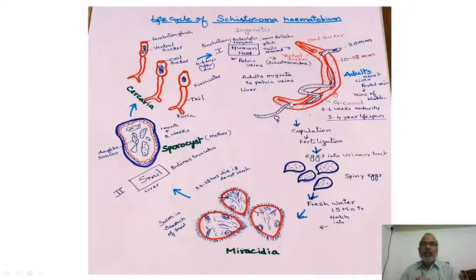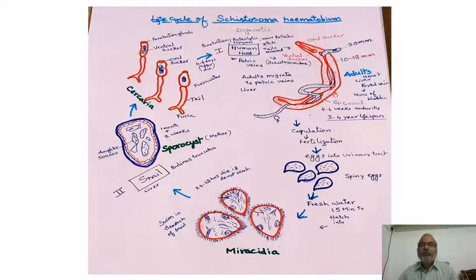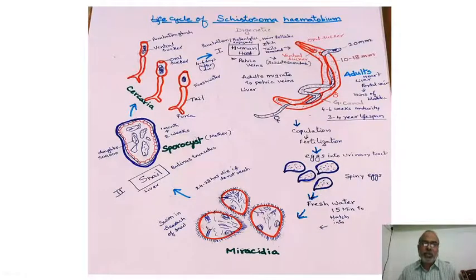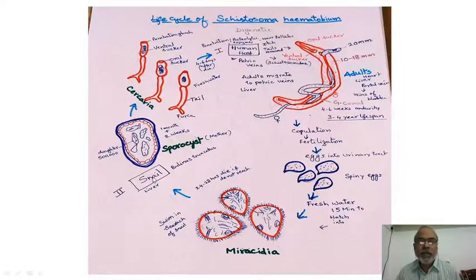Schistosoma haematobium is a digenetic parasite — one that completes its life cycle in two hosts. The definitive host is the human being because the parasite completes its sexual life cycle inside humans. The intermediate host is a snail, because inside the snail's body, larval development and asexual reproduction occur.